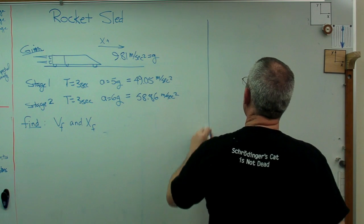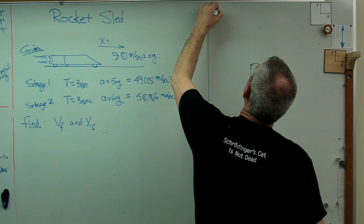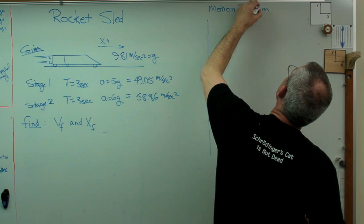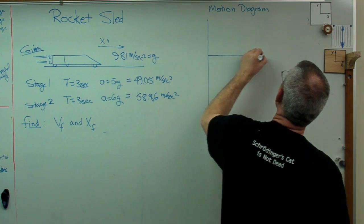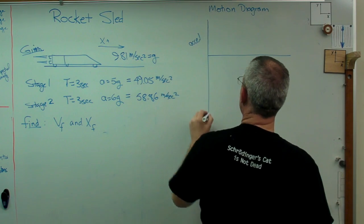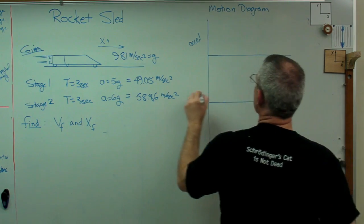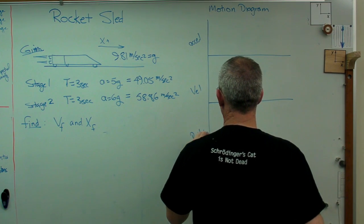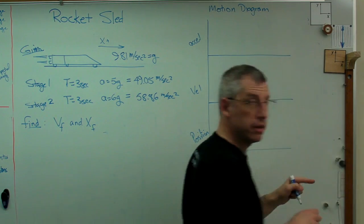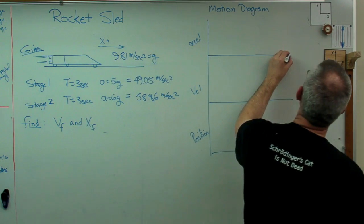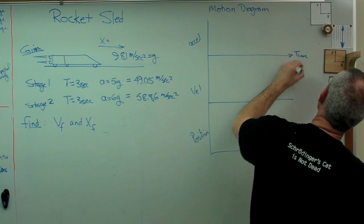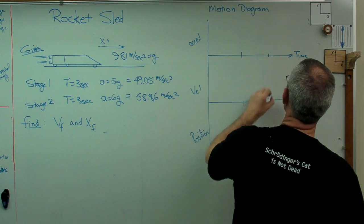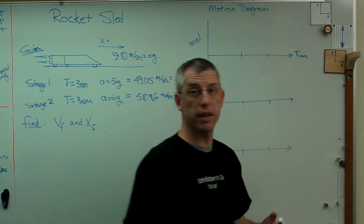All right. So the motion diagram is going to have acceleration at the top, velocity in the middle, and position at the bottom. So that's acceleration, velocity and position. And time goes out the horizontal axis on all three of them. So that's time. And we know we've got two time marks in here. We've got three seconds and we've got six seconds.